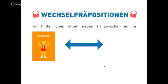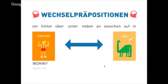Wechselpropositionen — they are called Wechselpropositionen, or changing prepositions, because they can come with accusative and dative. Accusative and dative are usually associated with two questions: wohin, meaning 'where to,' and wo for the dative, meaning 'where.'